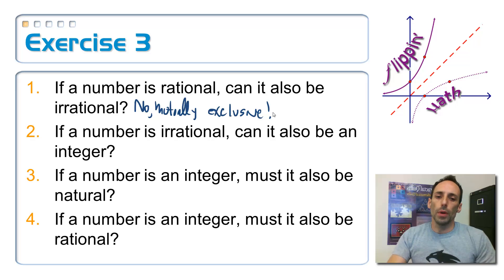If a number is irrational, can it also be an integer? If it's irrational, that means that it cannot be written as a fraction, but all integers can. You just put it over one. So, that means it's irrational. So, this is the same answer as number one. So, I'm going to say no. It's for the same exact reason.